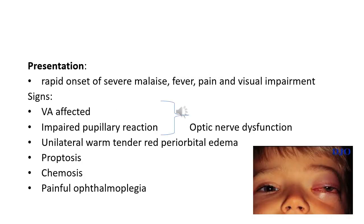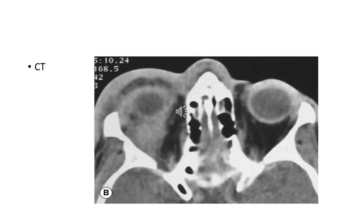Diagnosis depends on signs and symptoms. Patients typically present with rapid onset of severe malaise, fever, pain, and visual impairment. Signs include unilateral tender, warm, and red periorbital and lid edema. Proptosis — often obscured by lid swelling — is most frequently lateral and downward. Patients may develop painful ophthalmoplegia and optic nerve dysfunction. CT scan shows opacification of the deep orbital tissue, unlike preseptal cellulitis.